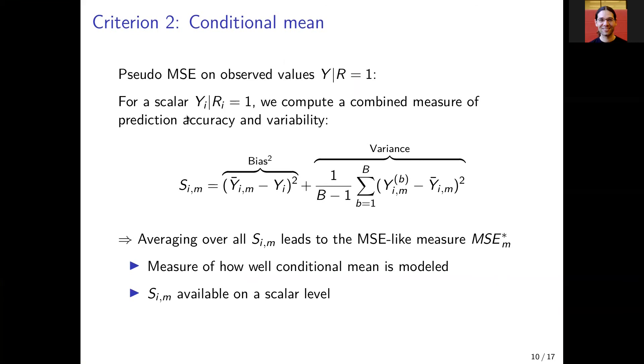For a scalar yi, we can compute a combined measure of accuracy and variability. Here the formula for that is for the scalar i and the method M.